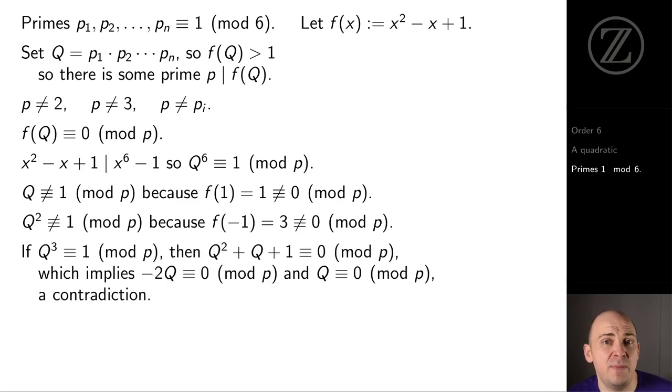Could it be that Q cubed is 1 mod p? Well, since Q isn't 1, we would then have that Q squared plus Q plus 1 is 0 mod p. And subtracting this from f of Q equals 0 mod p, we'd find that negative 2Q is 0 mod p. But since p isn't 2, this implies Q is 0 mod p, a contradiction.